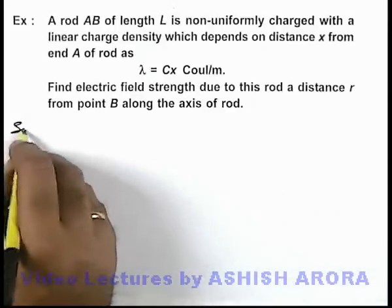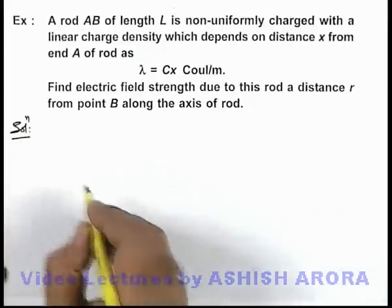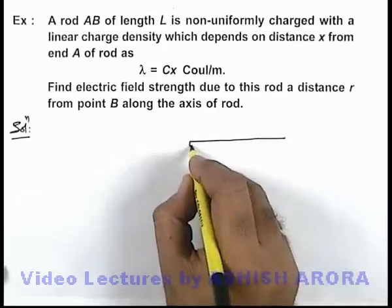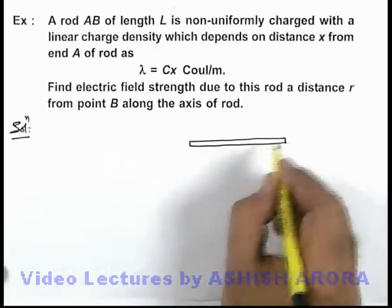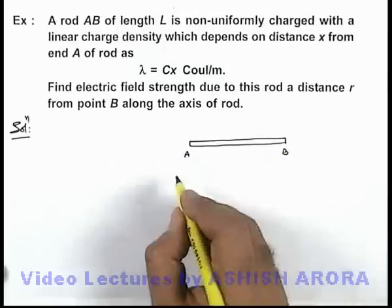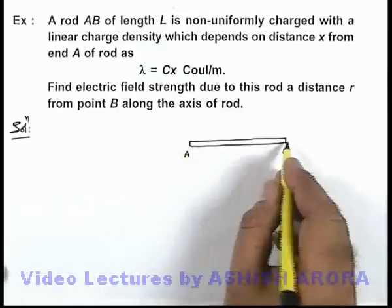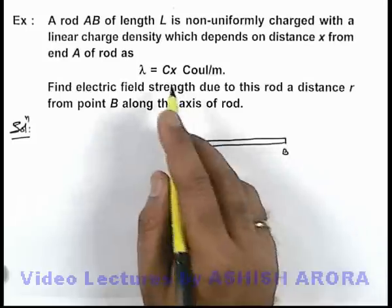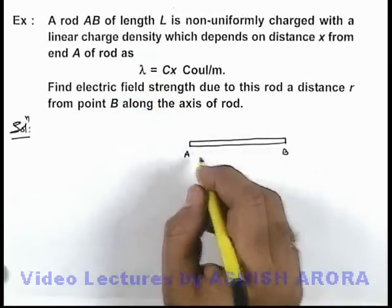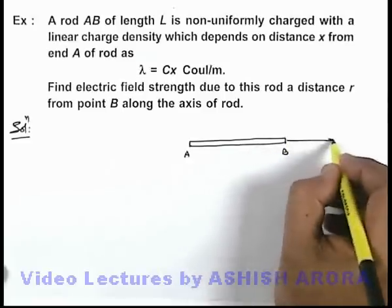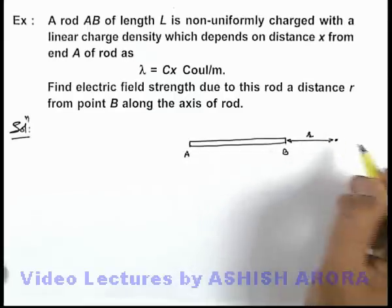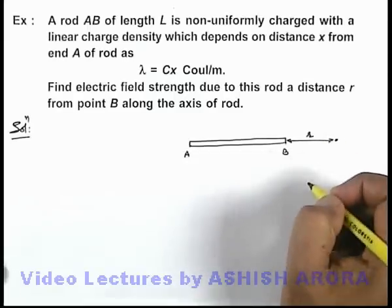Drawing the physical setup: this is the rod with ends A and B. It is charged with linear charge density λ = cx. From end B, at a distance r along the axis, there is a point P where we are required to find the electric field.